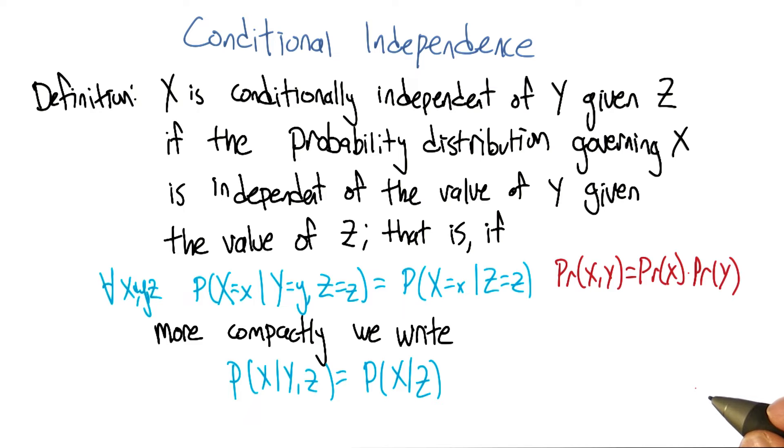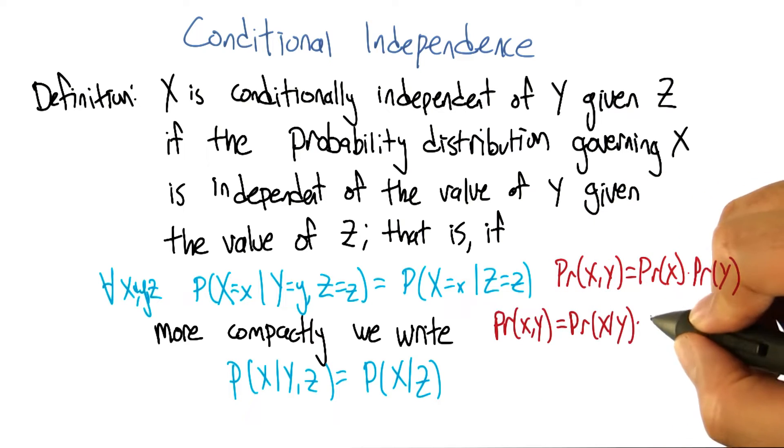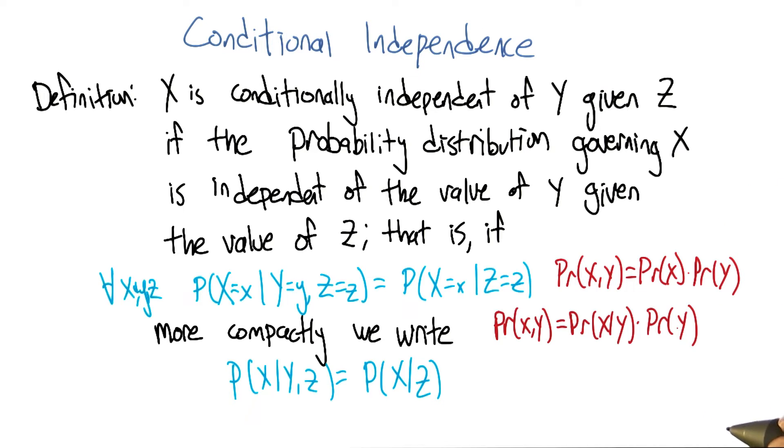we also know that the probability of X and Y is equal to the probability of X given Y times the probability of Y. So that means that the probability of X given Y is equal to the probability of X for all values of X and Y.